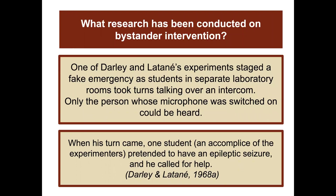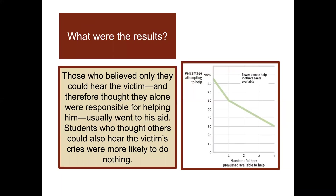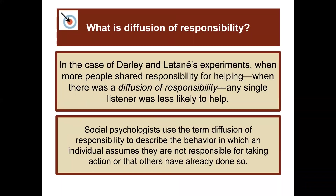One of Darley and Latané's experiments staged a fake emergency in which students in separate lab rooms took turns talking over an intercom. Only the person whose microphone was switched on could be heard. When his turn came, one student — an accomplice of the experimenters — pretended to have an epileptic seizure and called for help. Those who believed only they could hear the victim usually went to his aid. Students who thought others could also hear the victim's cries were more likely to do nothing. When more people shared responsibility for helping — a diffusion of responsibility — any single listener was less likely to help. Social psychologists use the term diffusion of responsibility to describe the behavior in which an individual assumes they are not responsible for taking action or that others have already done so.